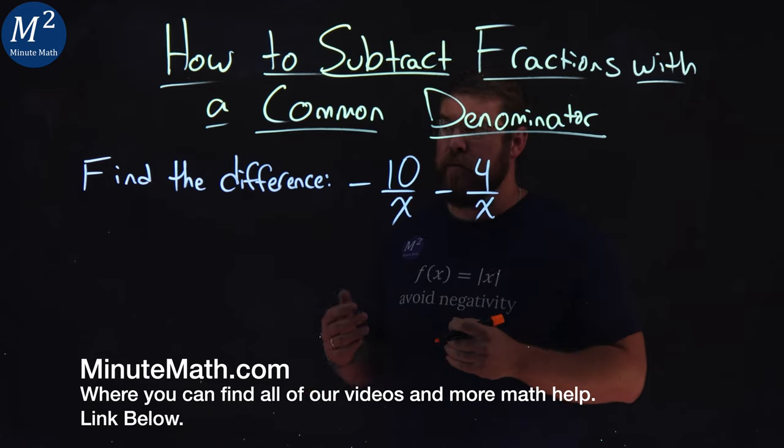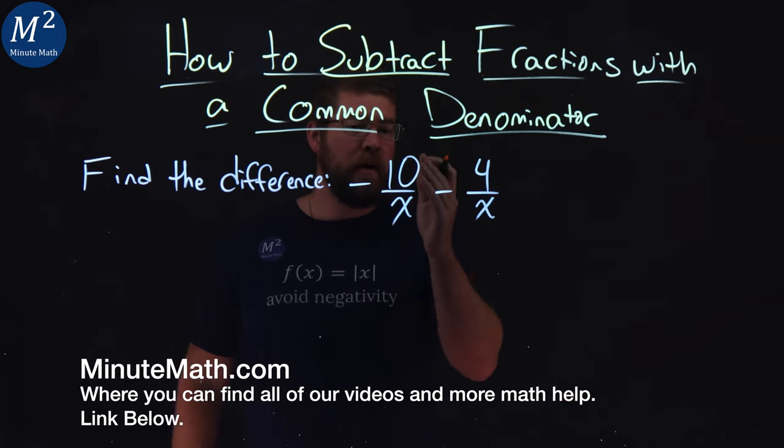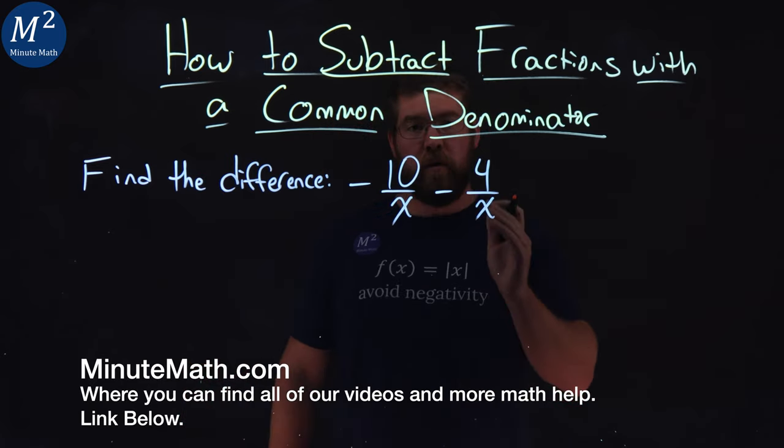We're given this problem right here. Find the difference of negative 10 over x minus 4 over x.